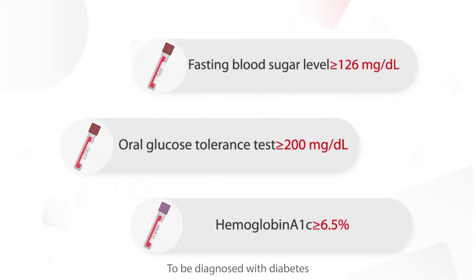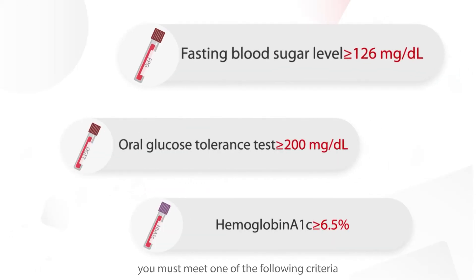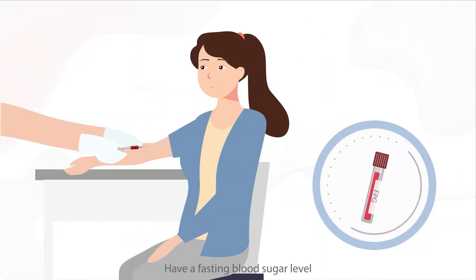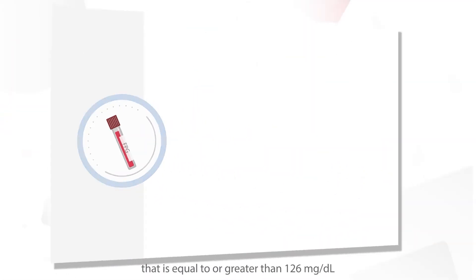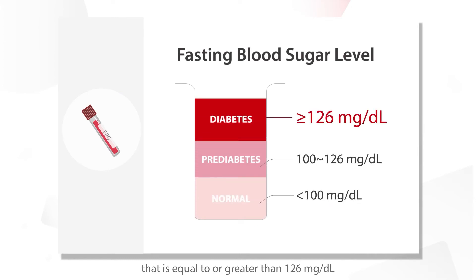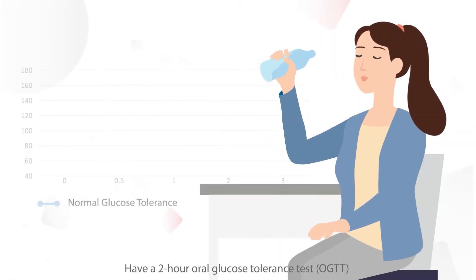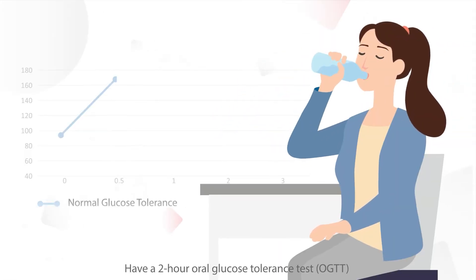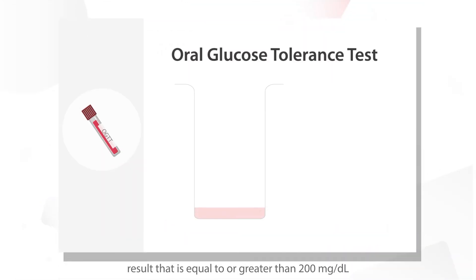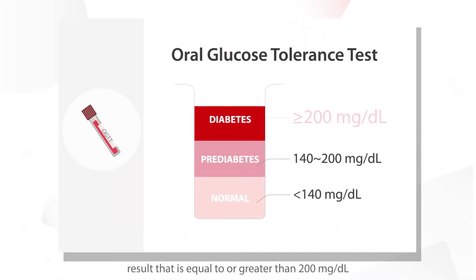To be diagnosed with diabetes, you must meet one of the following criteria: have a fasting blood sugar level that is equal to or greater than 126 mg per deciliter, or have a 2-hour oral glucose tolerance test result that is equal to or greater than 200 mg per deciliter.